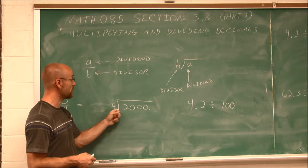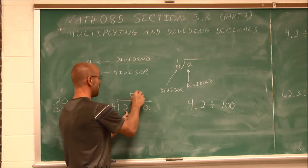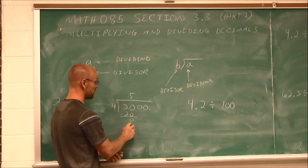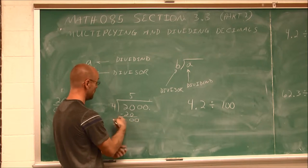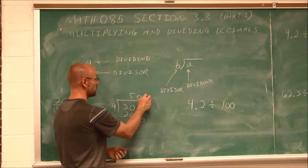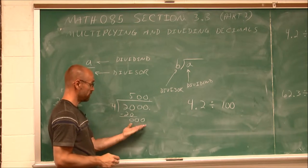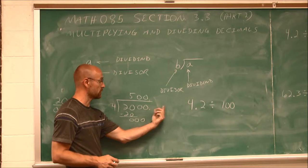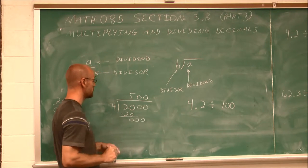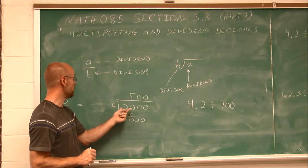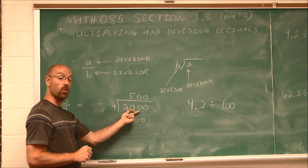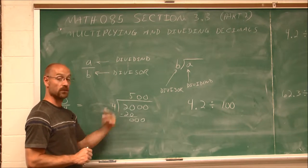Now I perform the division: 4 doesn't go into 2, but it goes into 20 five times — 5 times 4 is 20. The difference is 0. Then 4 goes into 0 zero times, and bringing down more zeros won't change anything. So the decimal point isn't really necessary here. 20 divided by 0.04 is 500, just as 2,000 divided by 4 is 500.